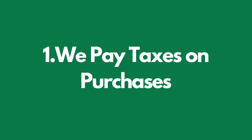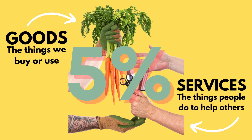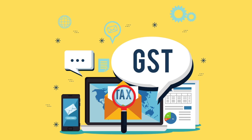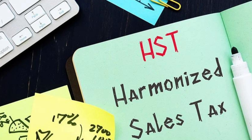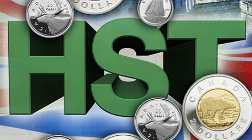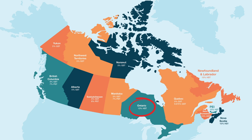We pay a sales tax on many of our purchases — for example, the five percent federal goods and services tax, commonly referred to as the GST. Provinces also charge an additional sales tax, with the exception of Alberta. In most provinces, federal and provincial sales taxes have been harmonized into a single tax referred to as the harmonized sales tax, or HST. Ontario has an HST of 13% and PEI has an HST rate of 15%.